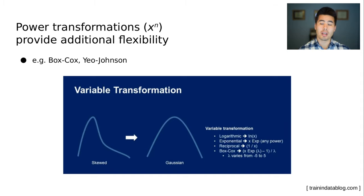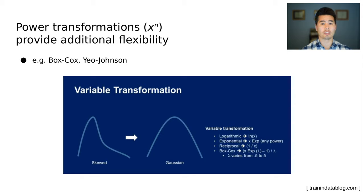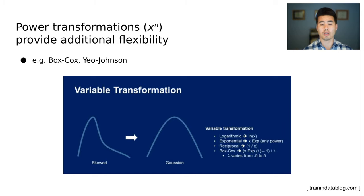Other transformations that can get us closer to symmetric or normal distributions are power transformations — a slightly broader class of transformations that similarly use exponents to transform your data. Besides log and exponential transformations, specific examples include reciprocal transformations, the Box-Cox transformation which has some free variables giving a lot of flexibility, and the Yeo-Johnson transformation as well.